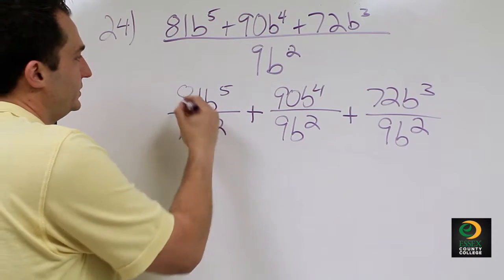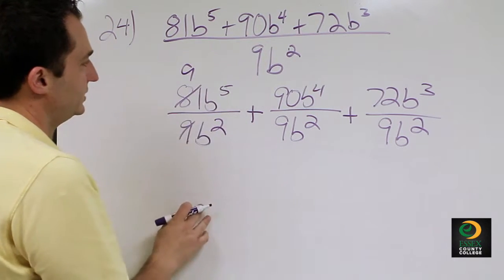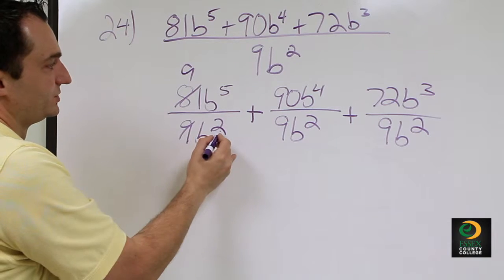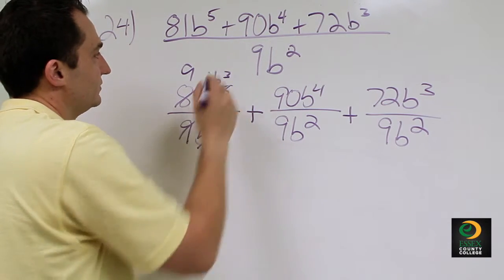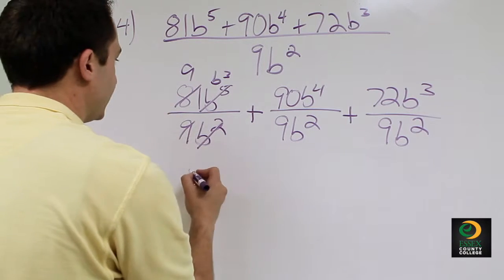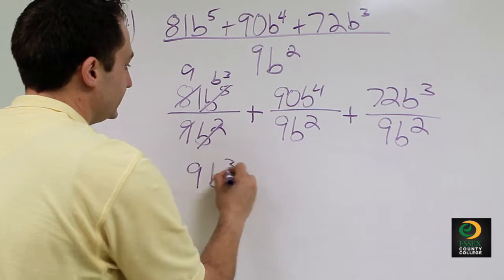9 goes into 81 nine times, and 5 minus 2 is 3. Since the 5 is bigger than the 2, the B³ remains on top. So the first fraction simplifies down to 9B³.